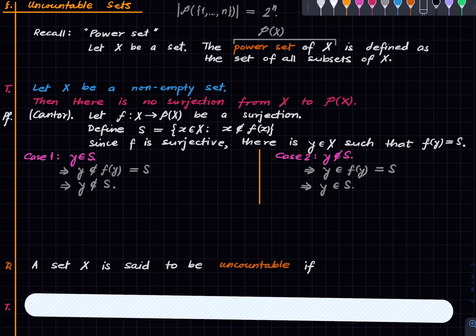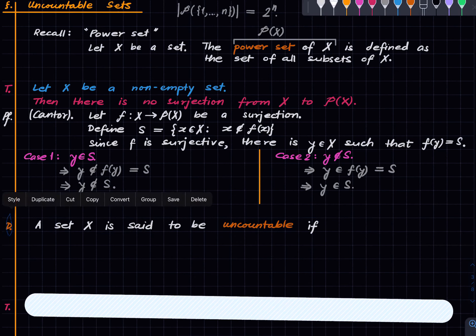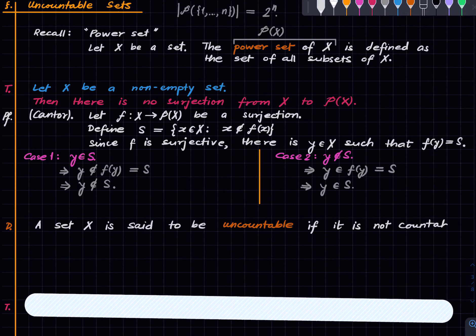Now we can define uncountability. It is perhaps more poignant to define it now. A set X is said to be uncountable if it is not countable or finite. In some sense uncountability is trying to say that the set is bigger than the set of natural numbers. It is not immediately clear from the definition that such sets exist, but they do.